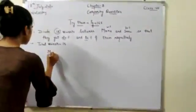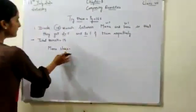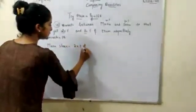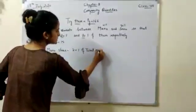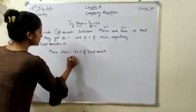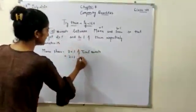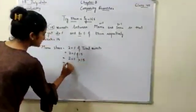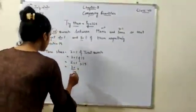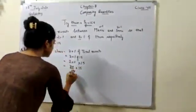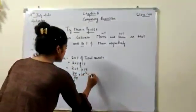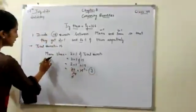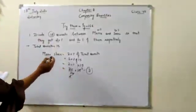Manu's share: Manu got 20% of the total sweets. So what is 20% of 15? The meaning of 'of' is multiply. So 20 by 100 into 15 — on cutting, this gives us 3. It means out of 15 sweets, 3 sweets were given to Manu.